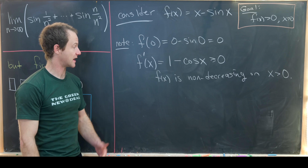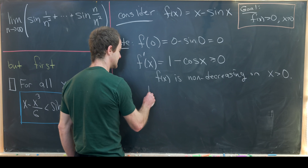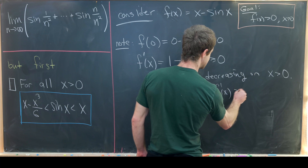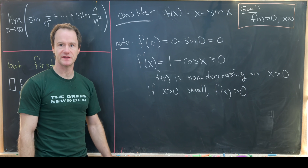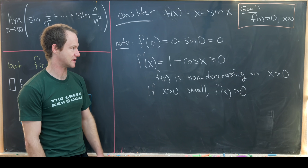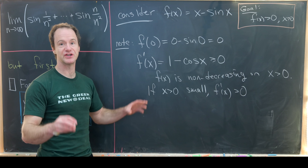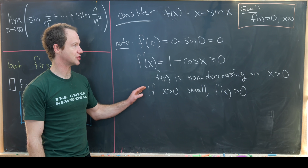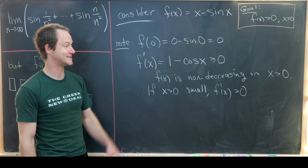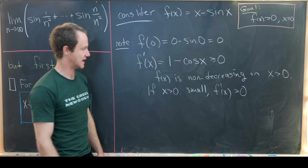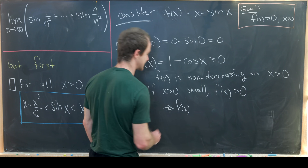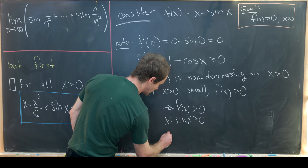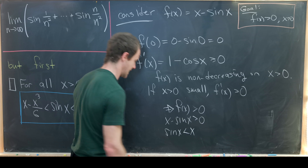If x is bigger than 0 but very small, f prime of x is definitely bigger than 0, because cosine is a little bit less than 1, giving us 1 minus something slightly less than 1, which is positive. That means just after leaving 0, the function leaves the value 0, and since it's non-decreasing, it never achieves 0 again. So f of x is bigger than 0, meaning x minus sine of x is bigger than 0, which means sine of x is less than x.